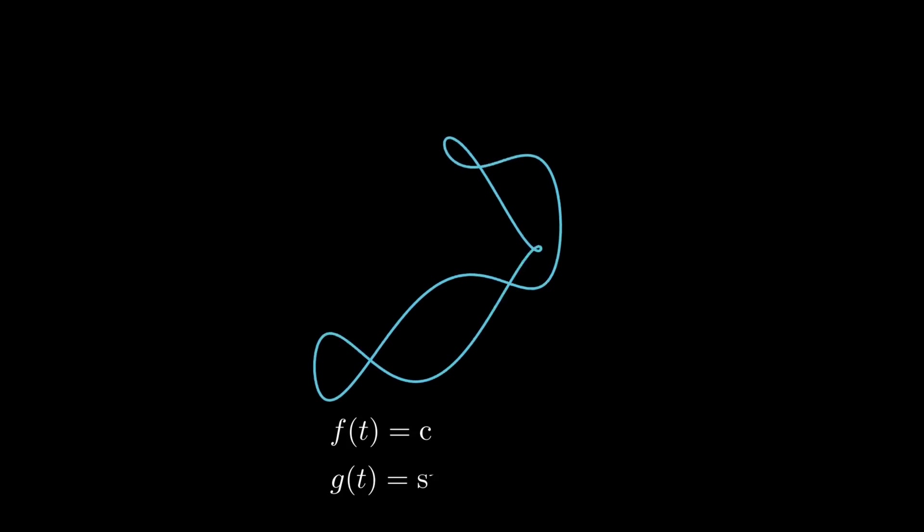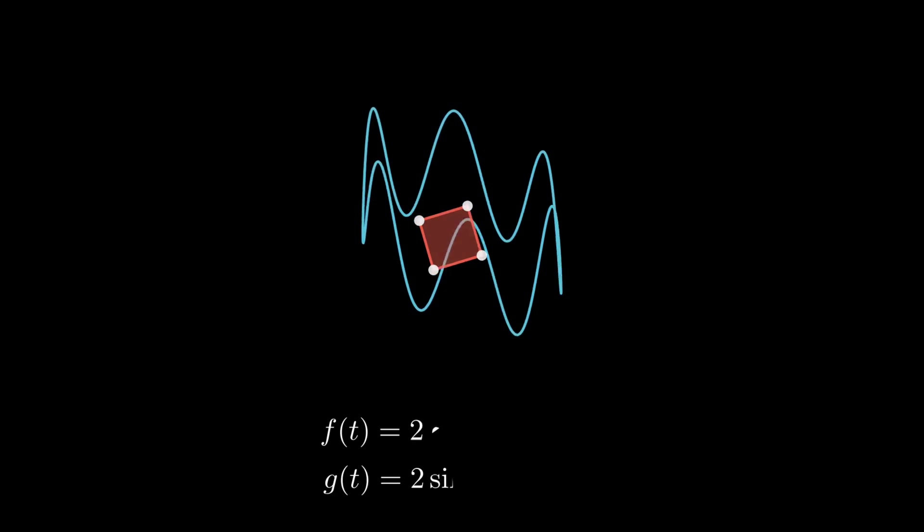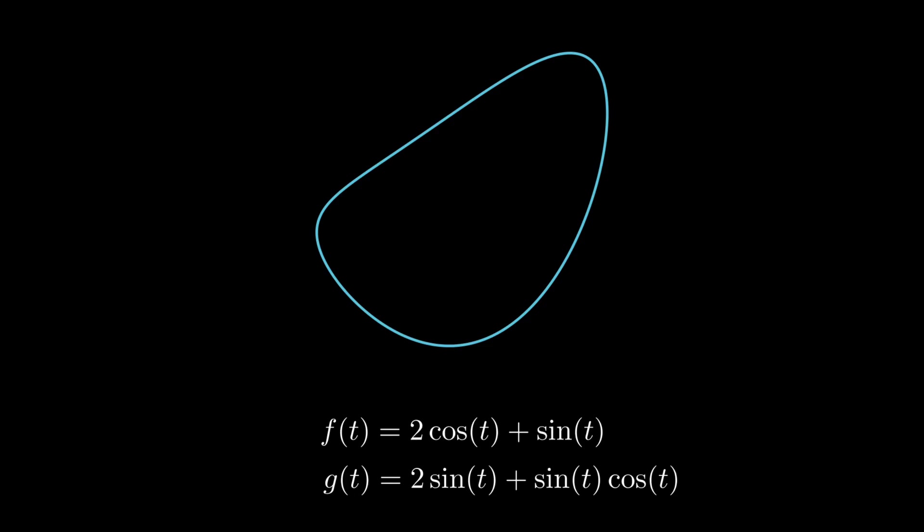But curves like this are a no-no, because it crosses itself, essentially creating more than one hole. Since the square peg problem is solved for many classes of curves, it is a nice activity to create different Jordan curves defined by their parametric equations in Desmos, and then find an inscribed square in the curve. See if you can find more than one.